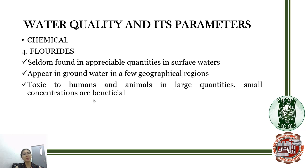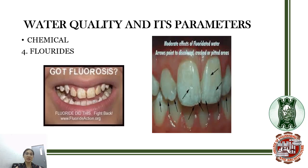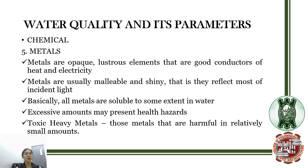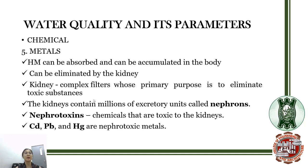The next chemical parameter is fluorides. Fluoride is seldom found in appreciable quantities in surface water. It is very toxic to humans and animals in large quantities, but beneficial in small concentrations. Excessive fluoride concentration leads to fluorosis. Another chemical parameter is metals, which were already discussed in your engineering materials module. These are just some of the information you need to know about metals in water — you can go over that material.